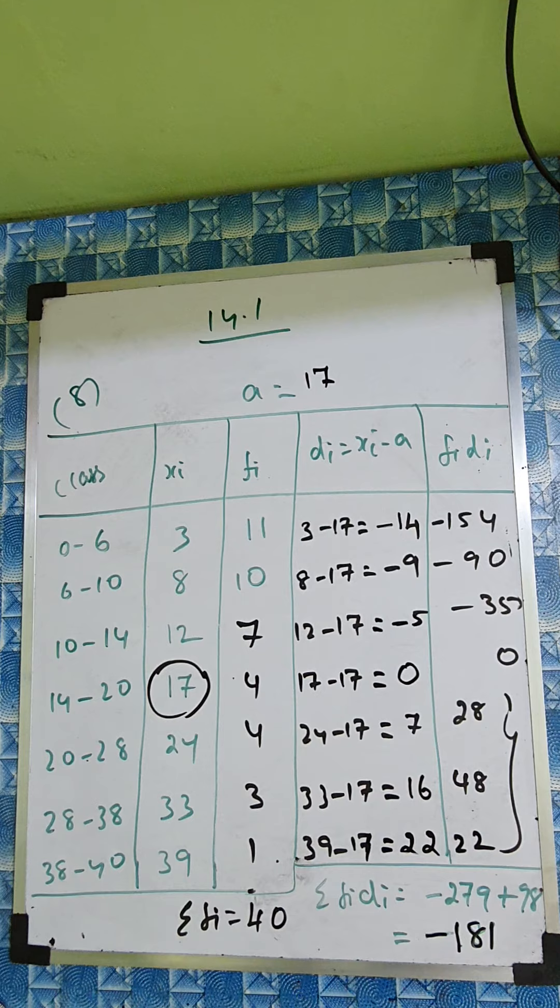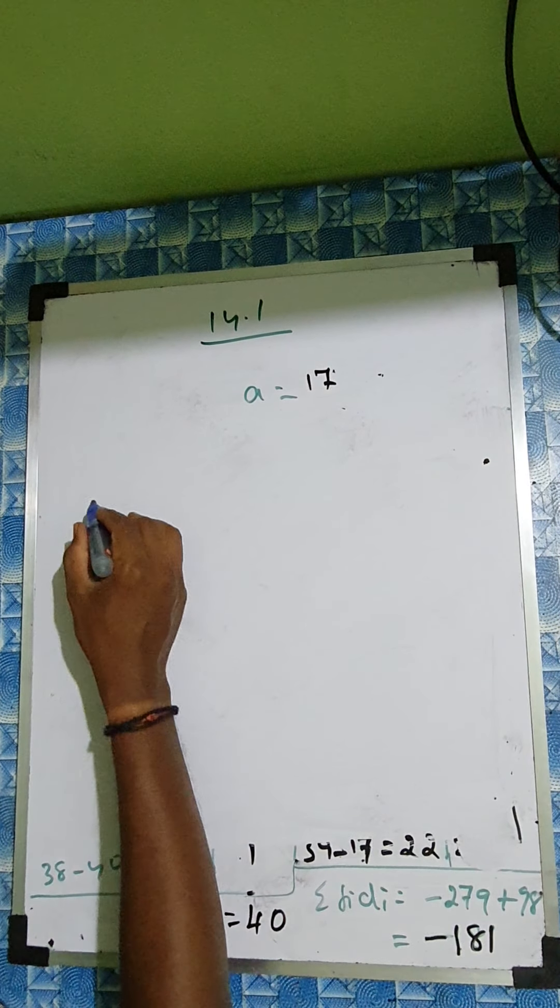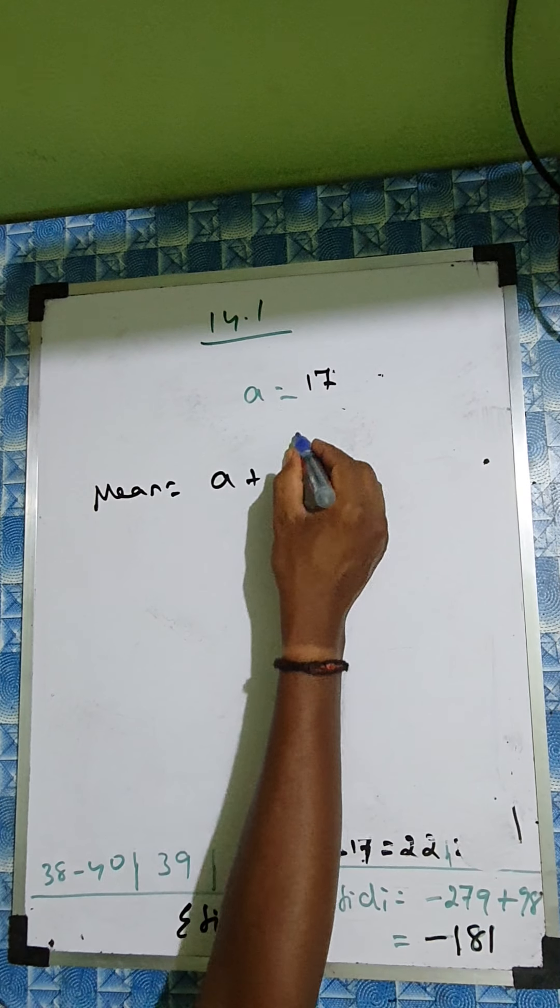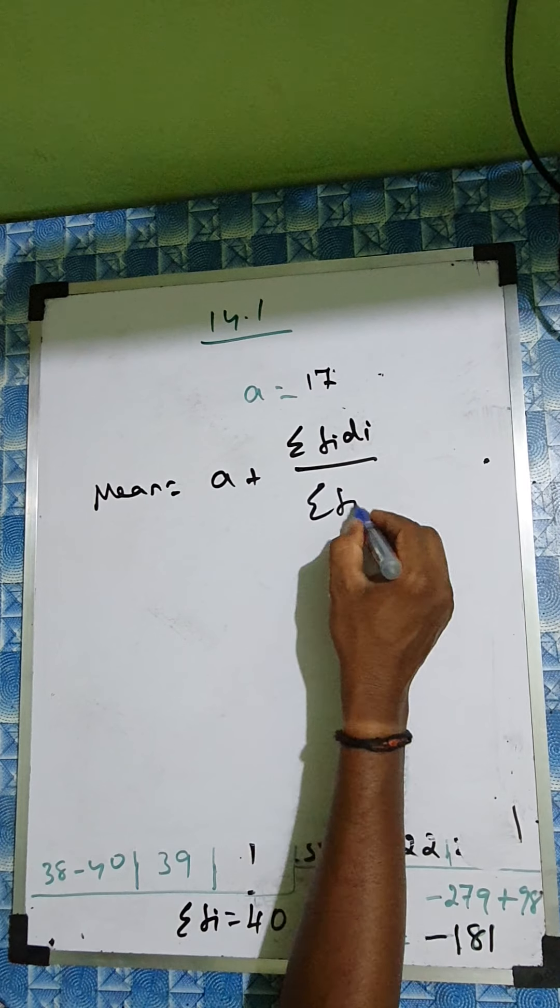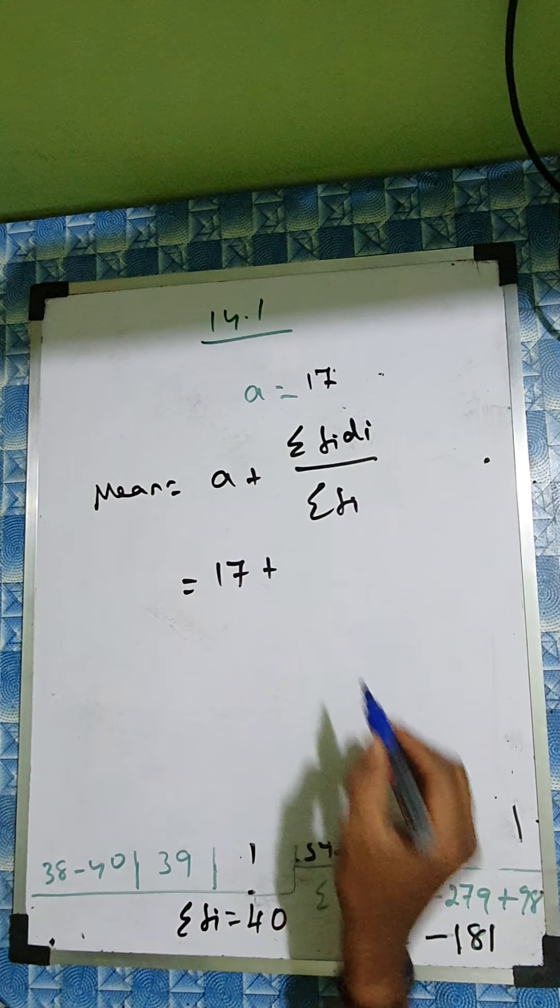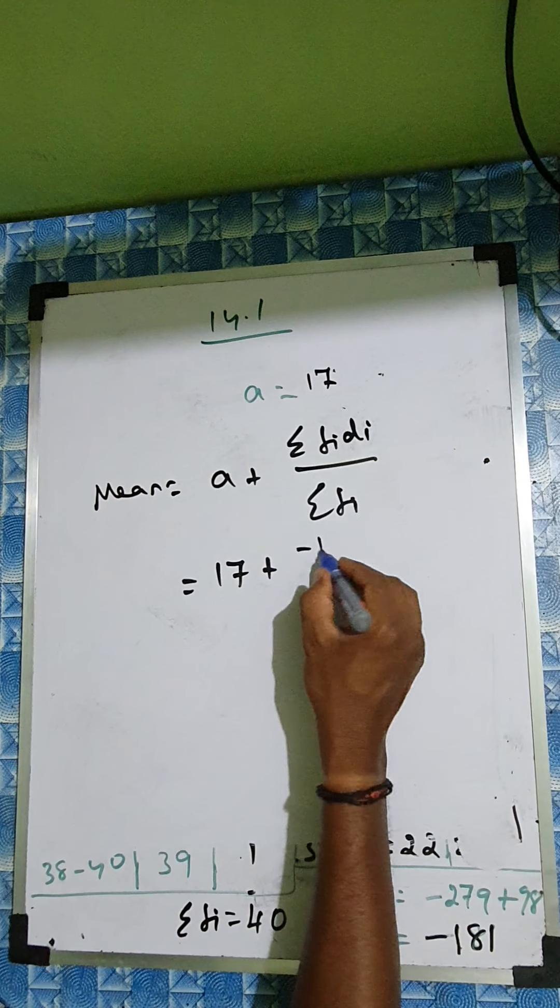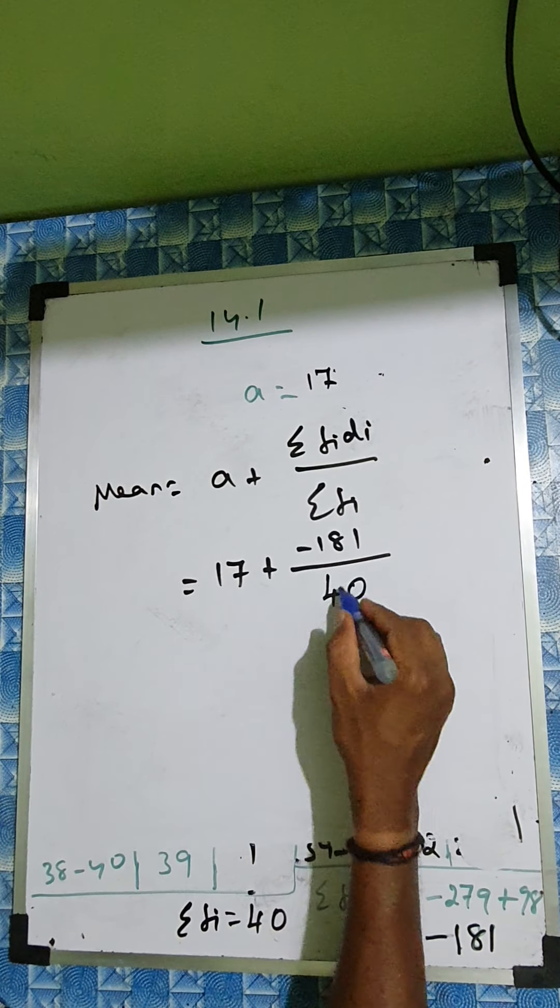So now we'll apply the formula here. So the formula: mean equal to a plus sigma fi di by sigma fi. So here a is 17, sigma fi di we got minus 181, by sigma fi is 40.